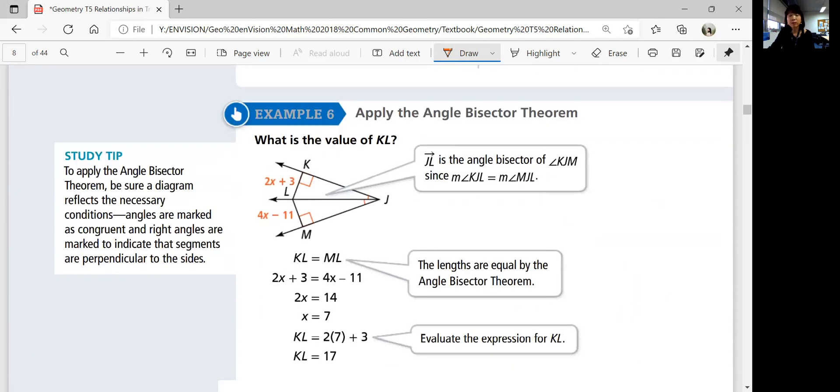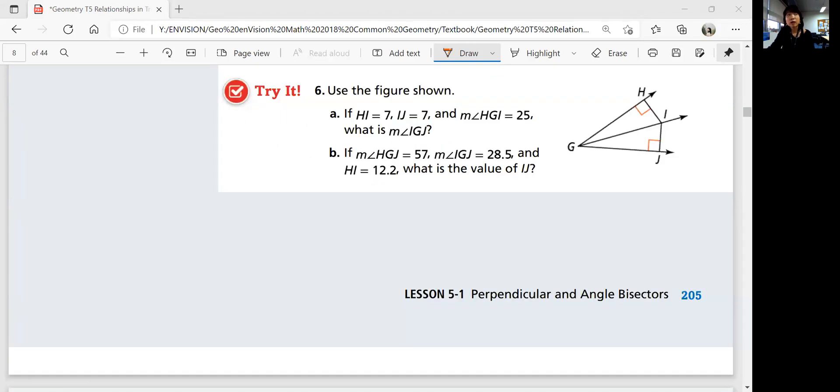The last example is about applying the angle bisector theorem. If you want to find the value of KL with this expression using the angle bisector theorem, you know that those two expressions should be the same because it lies on the angle bisector. So set it equal to each other and then solve for the variable. So now using the figure shown, see if you can do try it by yourself and come back when you're ready for answers.